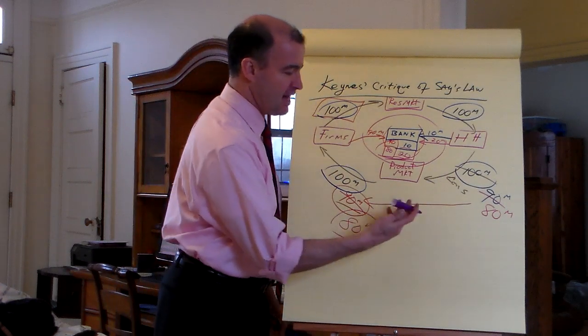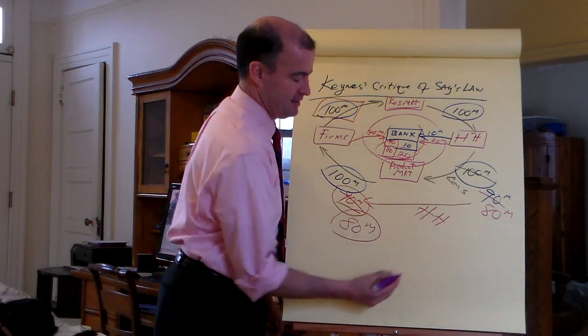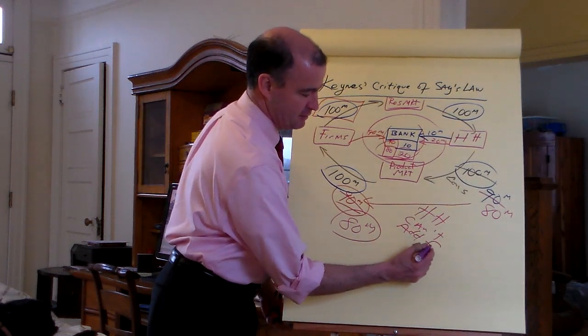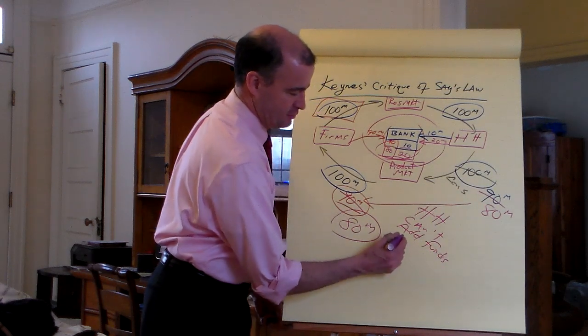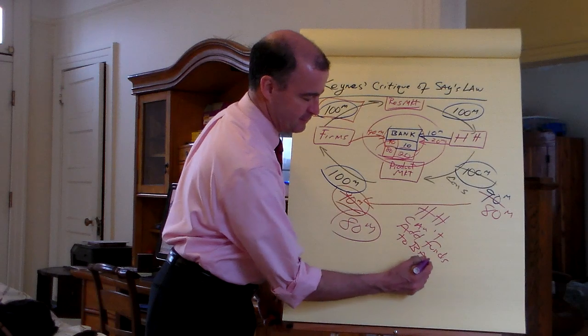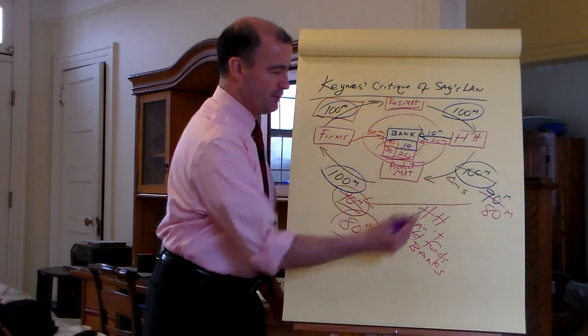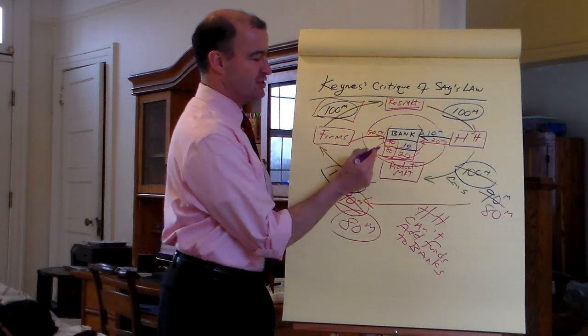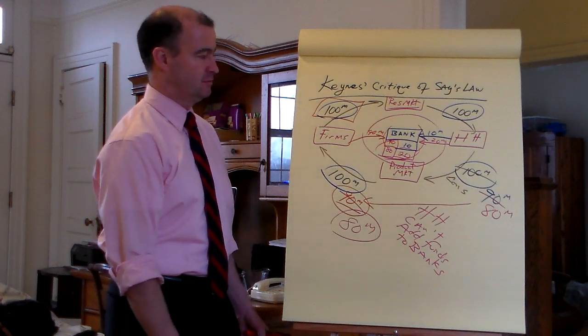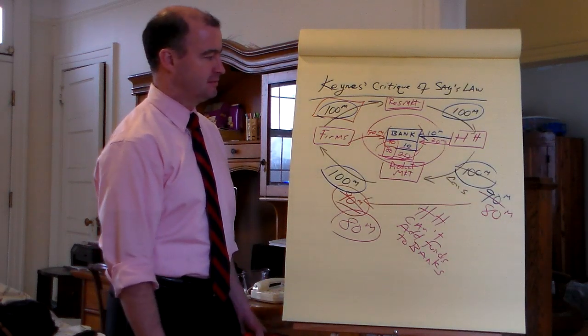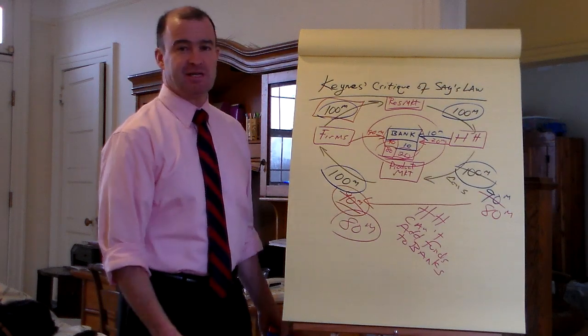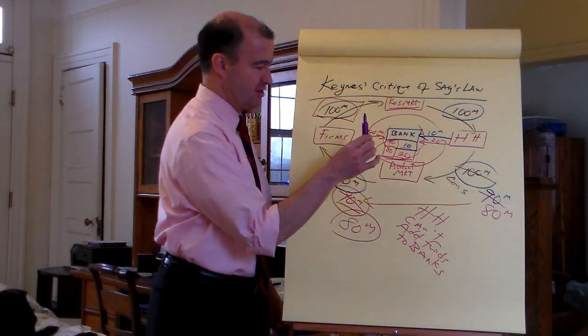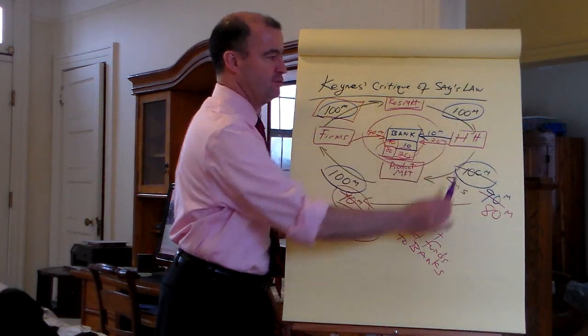So households really aren't adding in net terms. They're not really adding more funds to the system. They're just deciding whether they want to keep 10 of it or 20 of it. But no matter whether it's 10 or 20 or 15 or 40 or whatever the number is, the other part of it will go to the firms and they'll keep that revenue flow in their bank accounts. And at all times, there's $100 million in the bank. Households cannot add funds, loanable funds to banks, to the banking system.